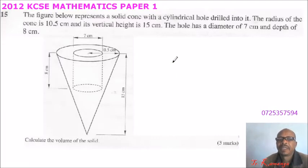This is number 15, 2012 KCSE Mathematics Paper 1. We are told the figure below represents a solid cone with a cylindrical hole drilled into it. The radius of the cone is 10.5 cm and its vertical height is 15 cm. The hole has a diameter of 7 cm and a depth of 8 cm. So we have that information on our diagram here.